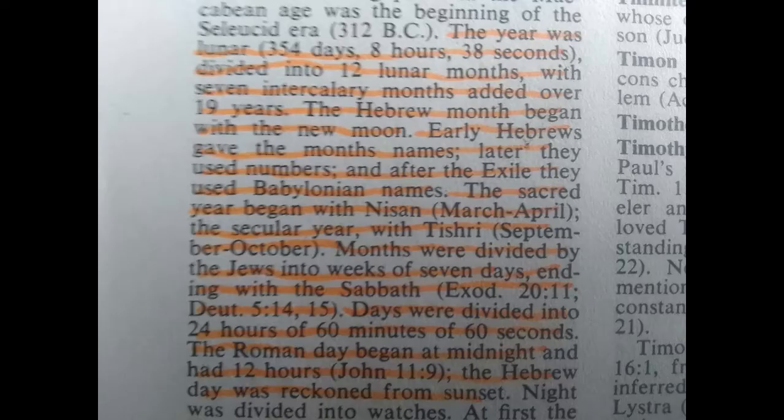After the exile they used Babylonian names. The sacred year began with Nisan, from March through April; the secular year with Tishri, September through October. Months were divided by the Jews into weeks of seven days ending with the Sabbath. Days were divided into 24 hours of 60 minutes of 60 seconds. The Roman day began at midnight and had 12 hours; the Hebrew day was reckoned from sunset.